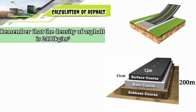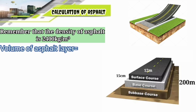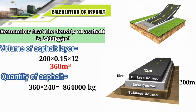First of all, we have to determine the volume of the asphalt layer. It is 200 multiplied by 0.15 multiplied by 12, which gives 360 cubic meters. Now if you multiply 360 by 2400, you get the quantity of asphalt in kg, which is 864,000 kg.